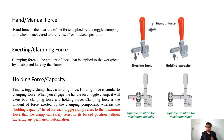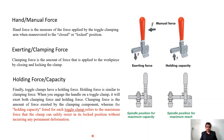This is the spindle position for maximum capacity. You can see that one position gives maximum capacity and another position gives maximum reach. Depending on the location of your job and your clamp, you can decide between these positions. We will see how this position affects the clamping force.